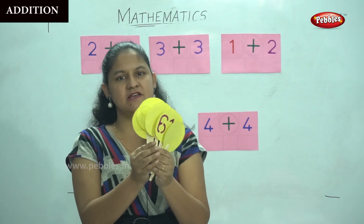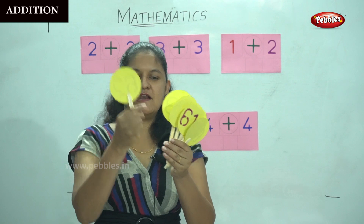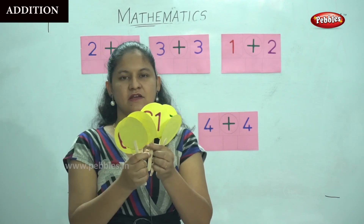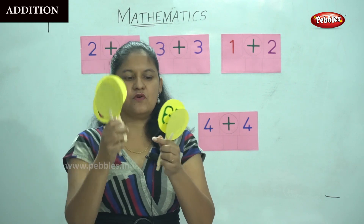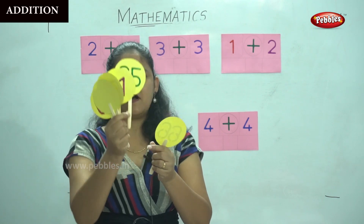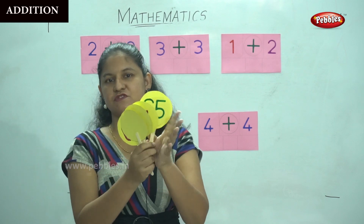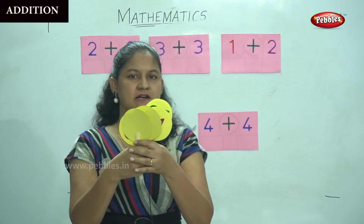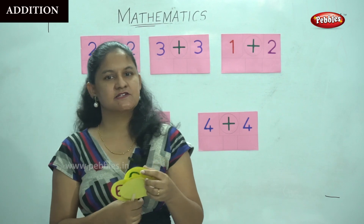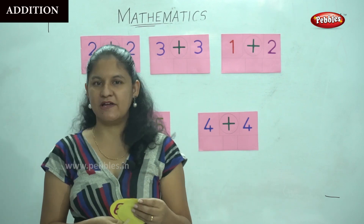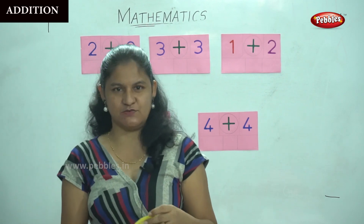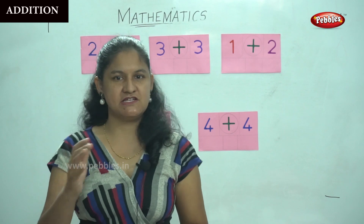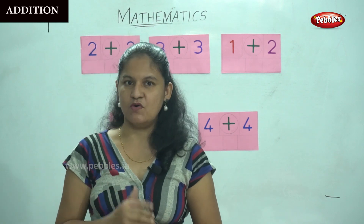Shall we count, children? So it is one, two, three, four, five and six. I have totally six placards in both hands. So now we are going to do an activity wherein it will make addition even more simple.